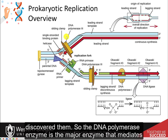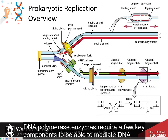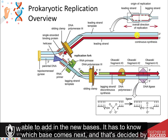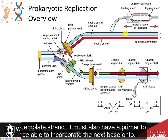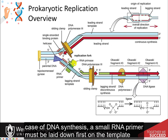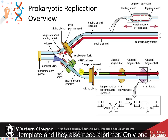The DNA polymerase enzyme is the major enzyme that mediates the replication process and introduces the new base into the growing DNA strands. DNA polymerase enzymes require a few key components to mediate DNA replication. First, it must have a template strand — the parent strands used to add in the new bases. It has to know which base comes next, and that's decided by the template strand. It must also have a primer to incorporate the next base onto. It cannot just start the new strand de novo, so in the case of DNA synthesis, a small RNA primer must be laid down first on the template, and then the polymerase can start adding onto that primer. DNA polymerases need a template, and they also need a primer.